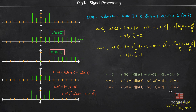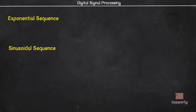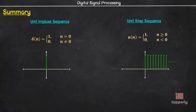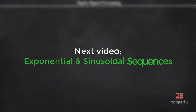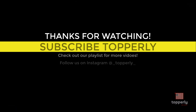I hope you now understand how any signal can be generated using δ(n) and u(n). We also have two more signals to be learned: exponential sequence and sinusoidal sequence. To summarize this lecture, we have learned about the unit impulse sequence and unit step sequence, their definitions, and their graphical representations. If you have any doubts, feel free to ask in the comments. If you found this lecture useful, please like the video and subscribe to the channel. In the next video we will learn about exponential and sinusoidal sequences. Thank you for watching and have a great day.